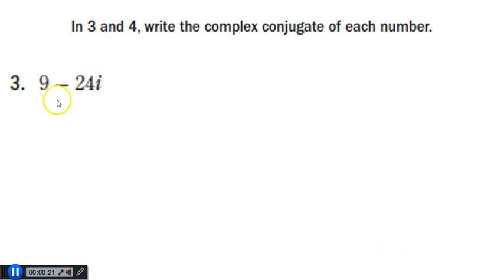This is a complex number where A is 9 and the imaginary part B is negative 24. The complex conjugate of a complex number is when you take the opposite of the B value. So here the B value is negative 24, and we're going to switch that to positive 24. So these two right here are complex conjugates of each other because the B value has been switched or is opposite.